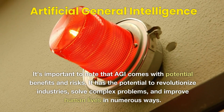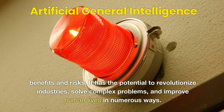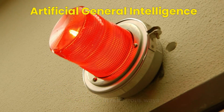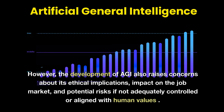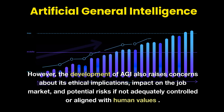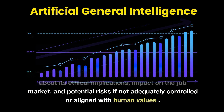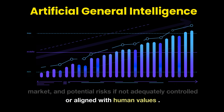It's important to note that AGI comes with potential benefits and risks. It has the potential to revolutionize industries, solve complex problems, and improve human lives in numerous ways. However, the development of AGI also raises concerns about its ethical implications, impact on the job market, and potential risks if not adequately controlled or aligned with human values.